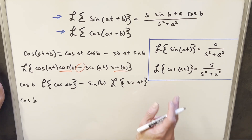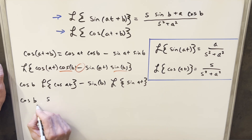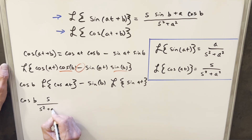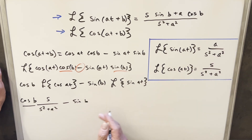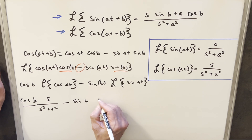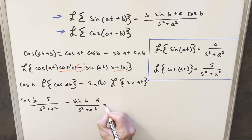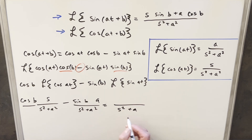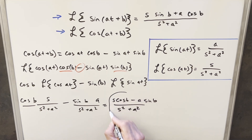Again, we use our formulas from the right. Cosine b times Laplace of cosine at gives s over s squared plus a squared, then minus sine b times Laplace of sine at gives a over s squared plus a squared. Again we have a common denominator of s squared plus a squared. Reordering, we write this as s cosine b minus a sine b, all over s squared plus a squared. This is our value for the Laplace transform of cosine at plus b.